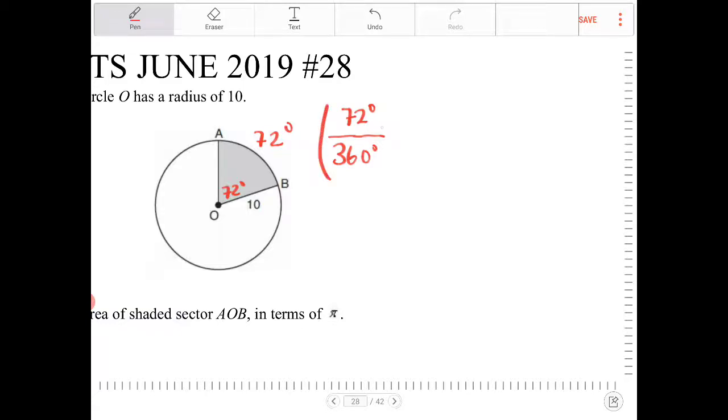We're going to multiply this proportion by pi r squared. So pi times 10 squared. This is the approach that you would take if you don't remember the area of a sector formula.